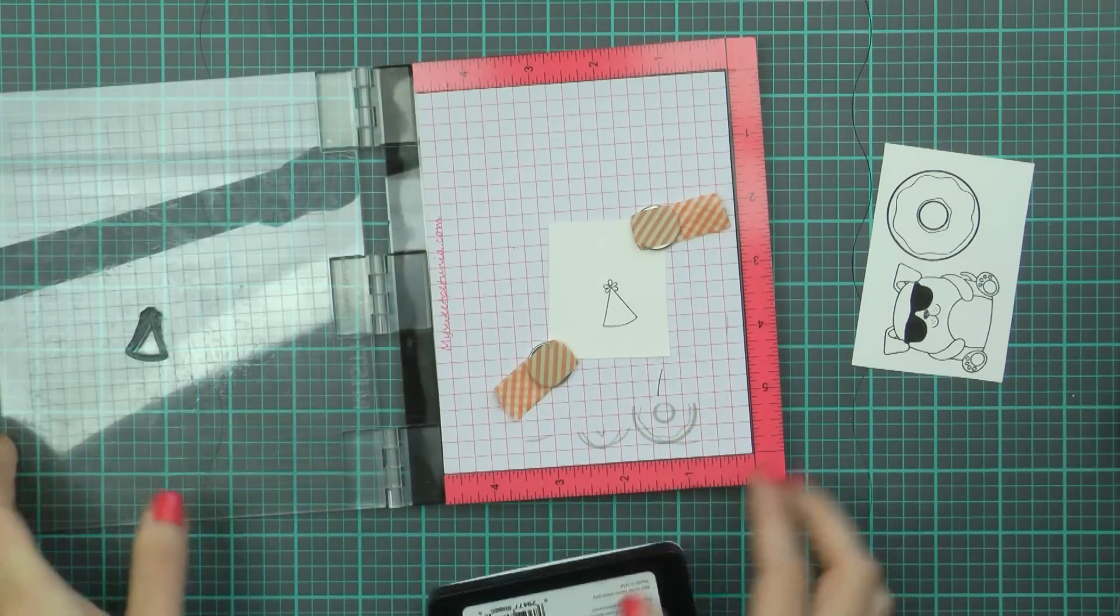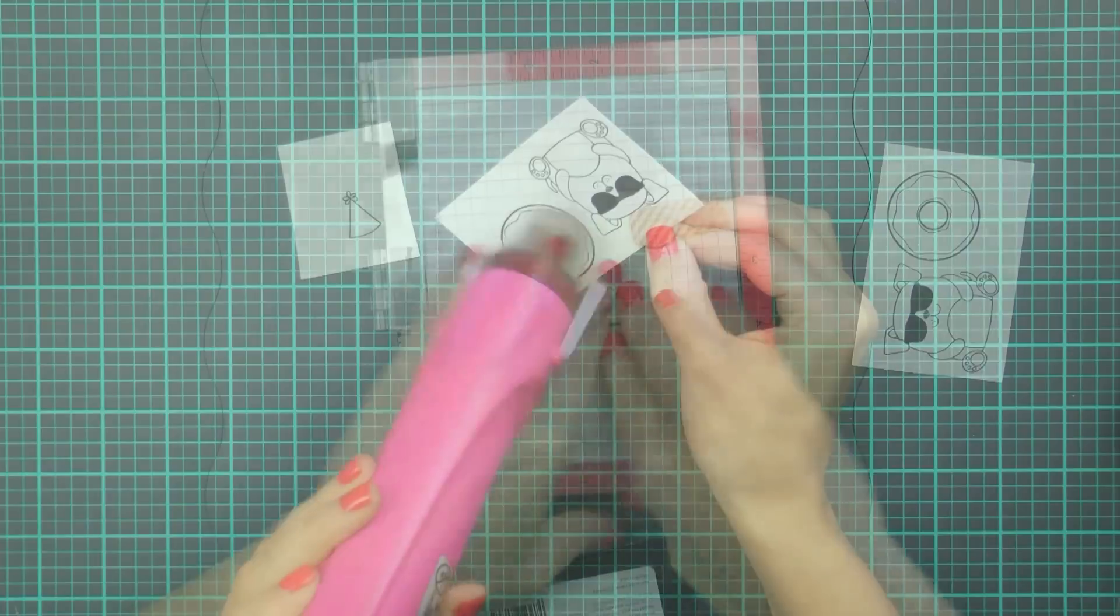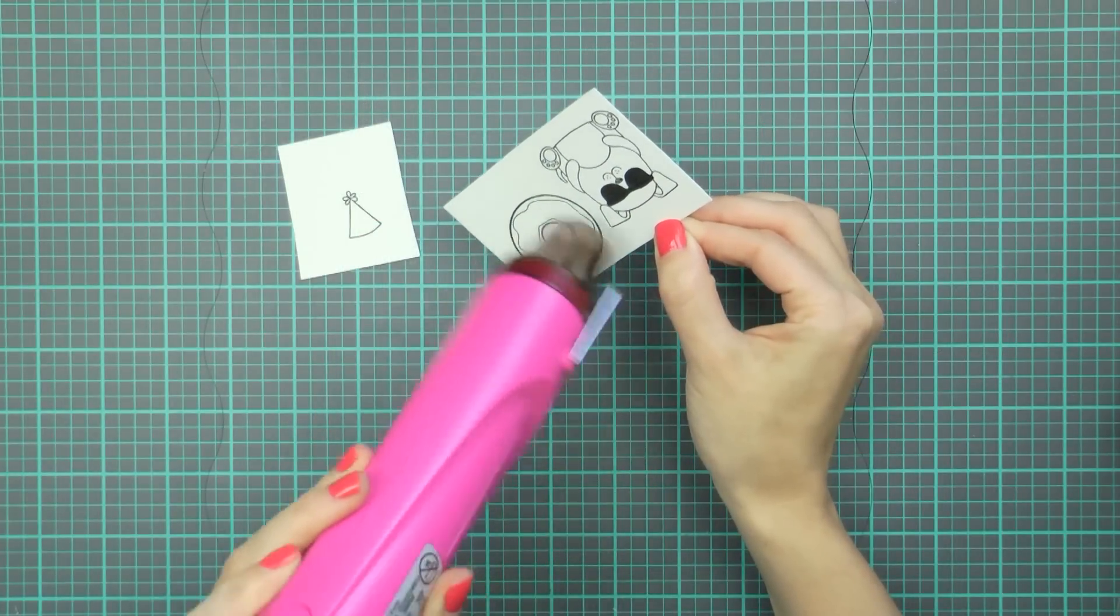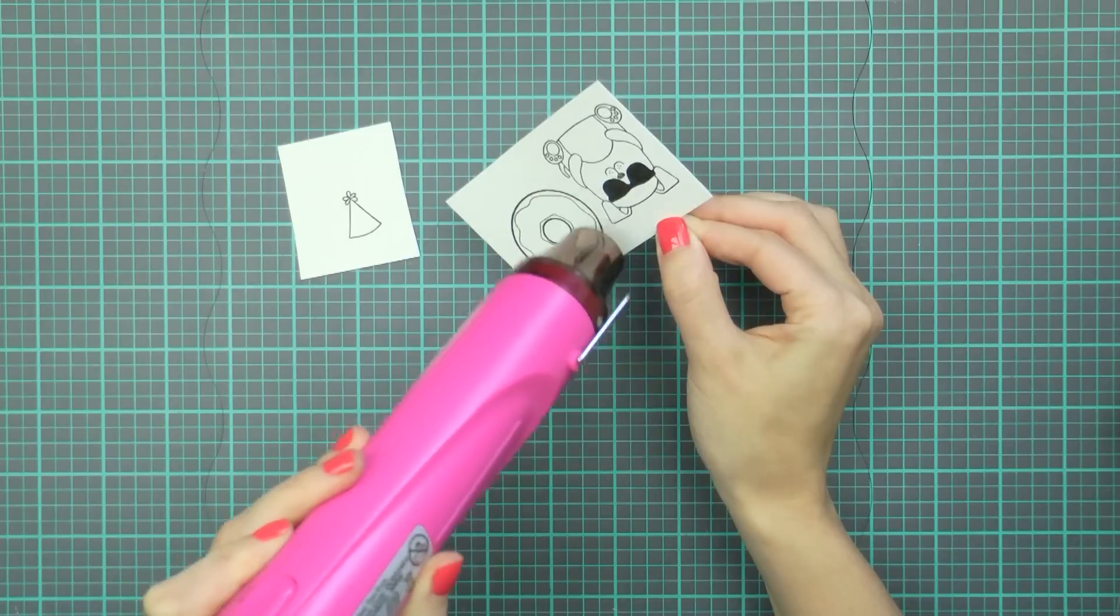Once everything was pre-stamped I started working on the donut. Because I needed to heat emboss the next layer, I used my heat tool to first dry the ink.